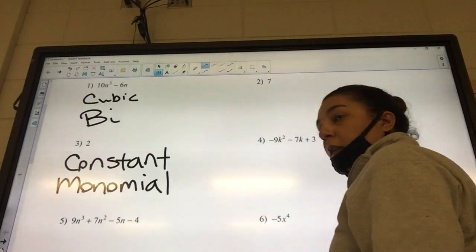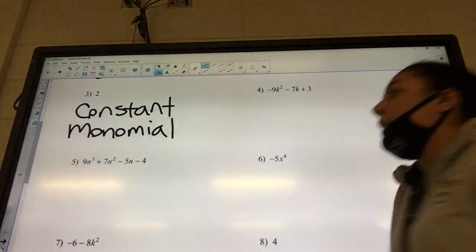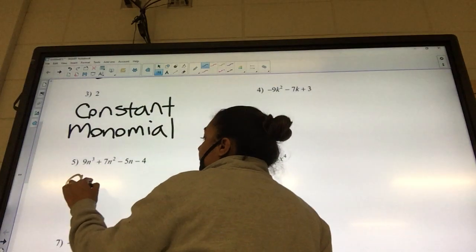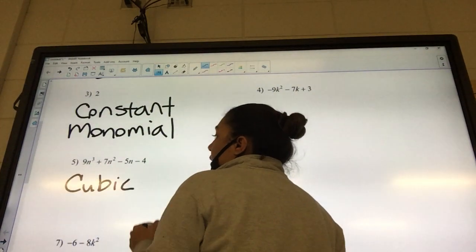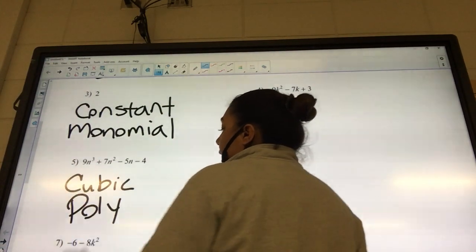Okay, nine. What is the highest exponent? Three, so it's going to be a cubic. How many pieces? Four. So it's going to be a polynomial.